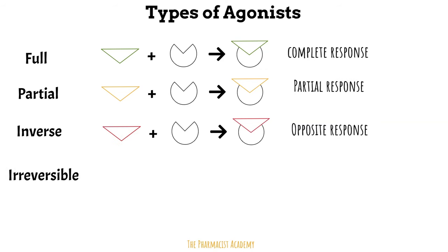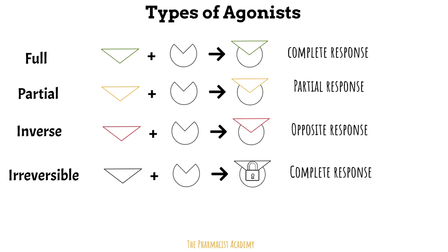Irreversible agonists are drugs that bind to the receptor and lead to a full, complete response. Normally, when a drug, ligand, or substrate binds to a receptor, it will leave after some time. Or, if there is another drug or ligand with a higher affinity for the receptor or higher concentration, it can possibly displace the initial drug. With irreversible binding, the drug will not be influenced by anything and will stay bound to the receptor.